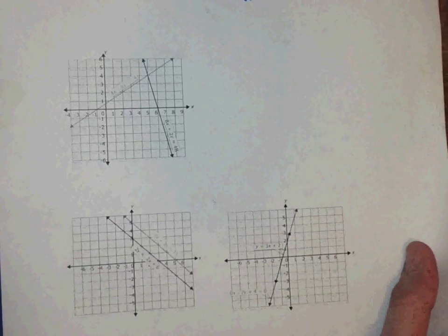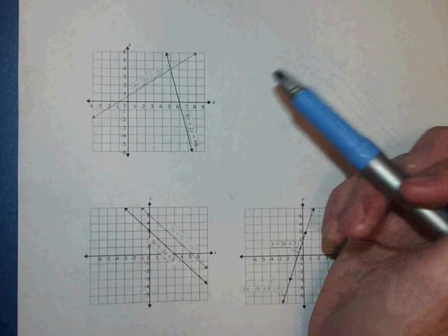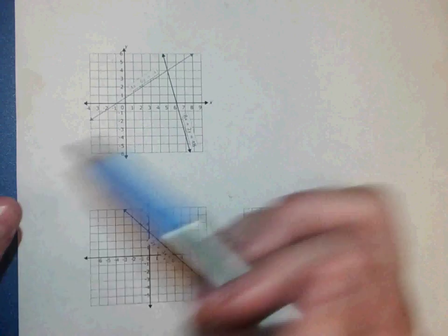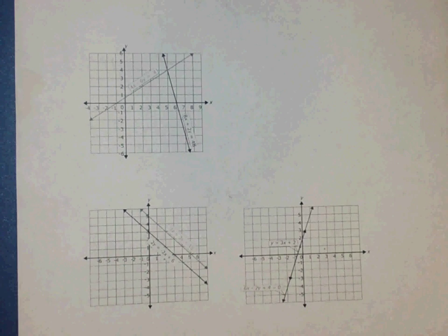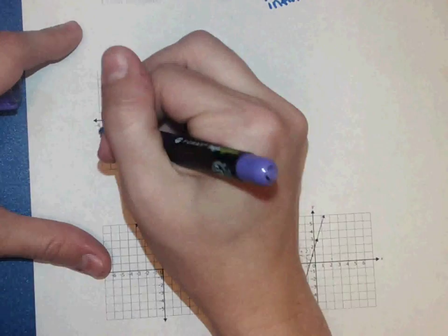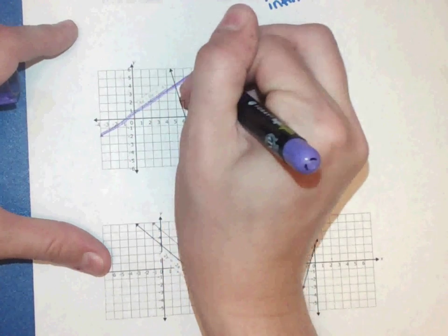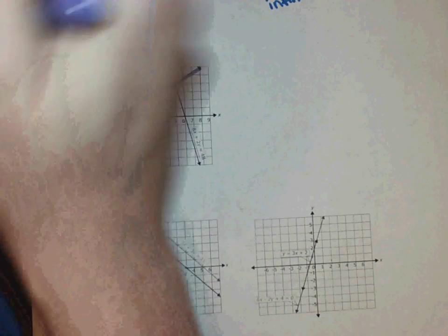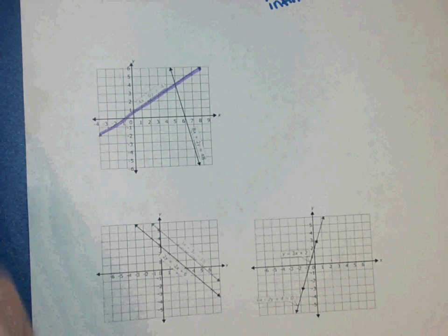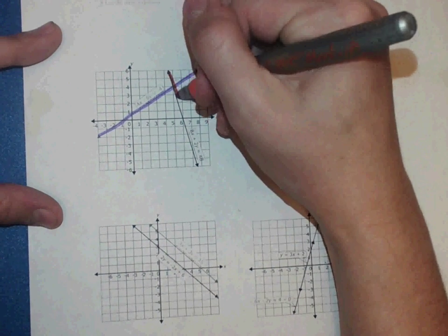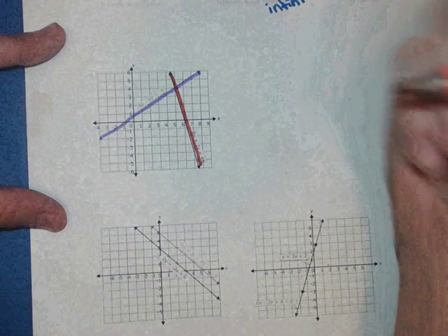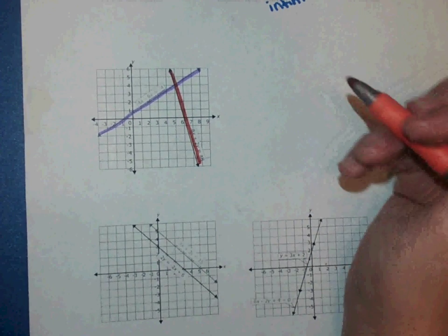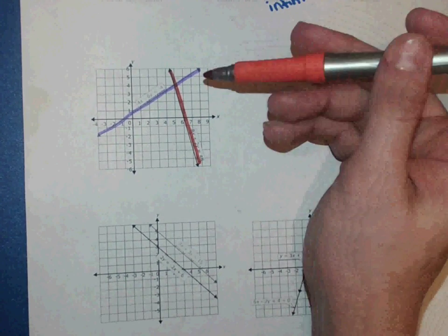So let's go down here. I've got three different graphs. And we've got this first graph. I'm going to draw one line with this purple, one line with this orange, just so you can see it just a little bit better on the camera.